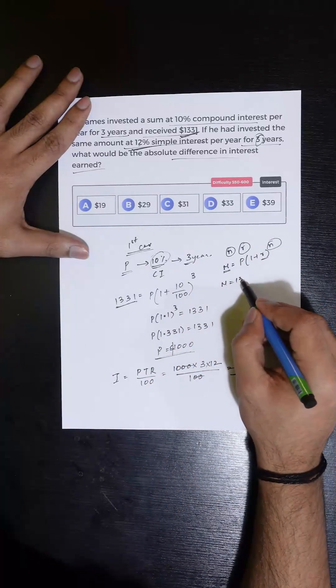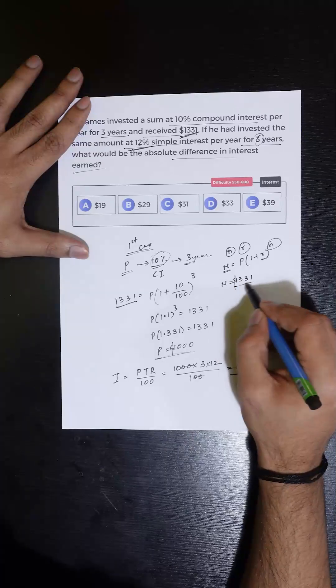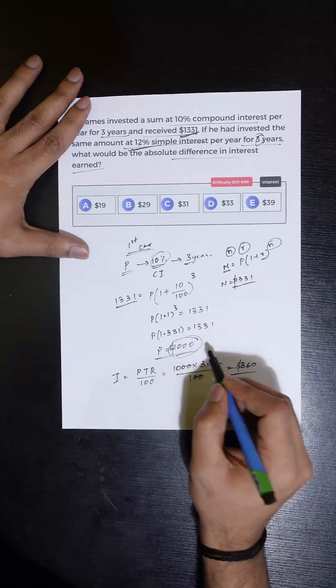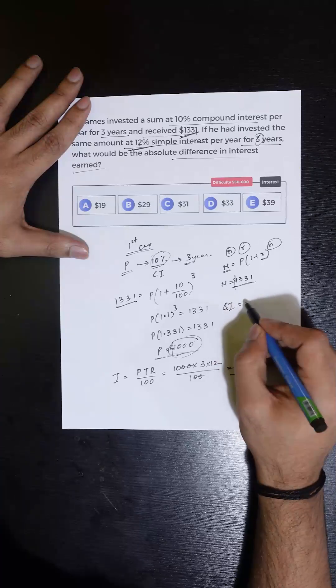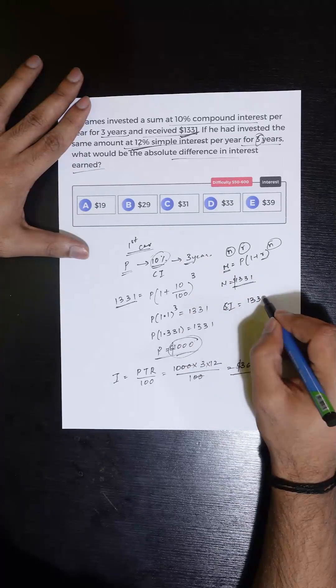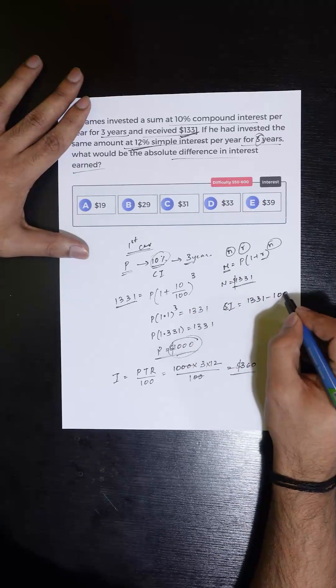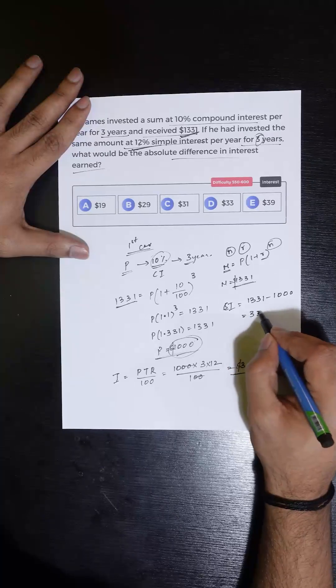In the first case, the total amount he is receiving is 1331 dollars and the money invested is 1000 dollars. So the compound interest gained in the three years can be calculated as 1331 minus 1000, which equals 331 dollars.